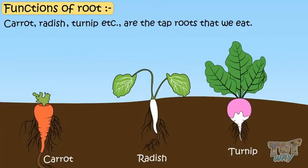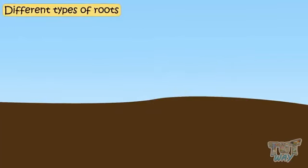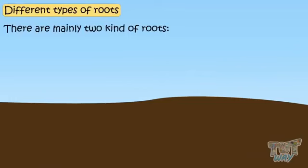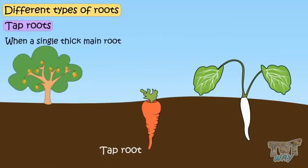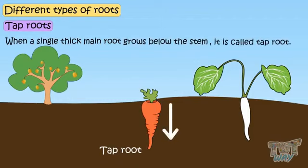Now let's see different types of roots. There are mainly two kinds of roots: tap roots and fibrous roots. When a single thick main root grows below the stem, it is called tap root.